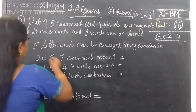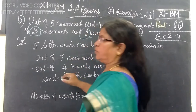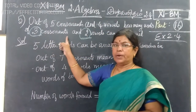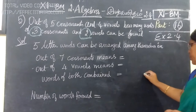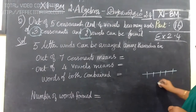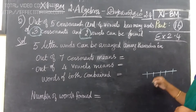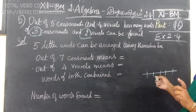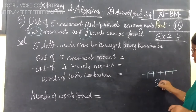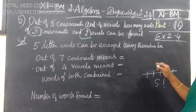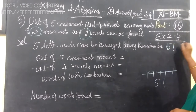We are making 5-letter words. Under 5-letter words, 3 consonants and 2 vowels make a 5-letter word. If we can form a 5-letter word, then we can arrange it in factorial 5 ways. We can form it in factorial five ways.